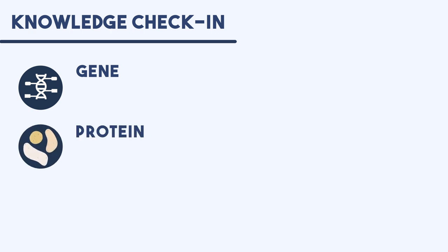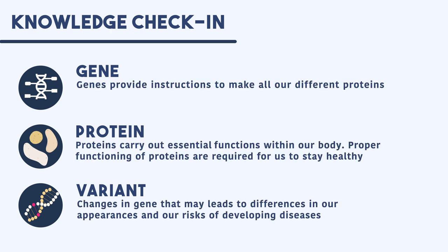Time for a knowledge check-in. Let's review some of the key terms discussed. Genes found within our DNA contain the instructions to all the proteins in our body. Proper functioning of these proteins are required for us to stay healthy. All of us have millions of variants in our genome that makes us who we are. However, some of these variants are in genes that can potentially cause our proteins to malfunction, which can lead to a number of different outcomes, including disease. Please take a moment to review the definitions on the screen.